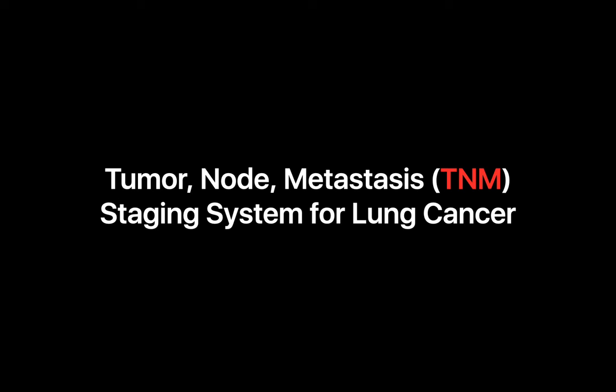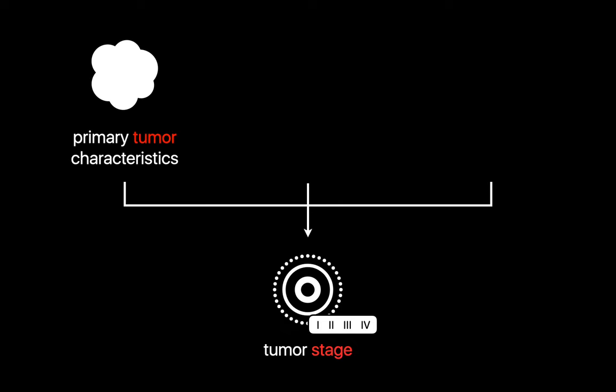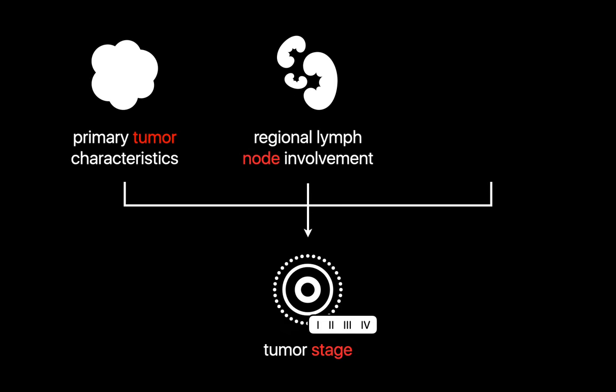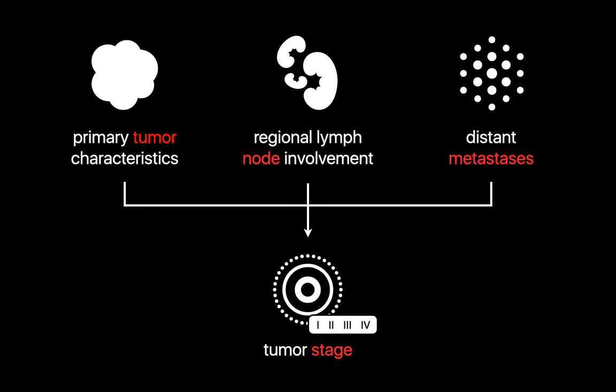The TNM system is a standardized method for categorizing the extent or stage of lung cancer spread in patients on a scale of 1 through 4, based on a combination of the primary tumor's characteristics, the extent of regional lymph node involvement, and the presence or absence of distant metastasis. The primary tumor, or T category, is scored on a scale of 1 to 4, based on the size of the primary tumor and extent of invasion into adjacent tissues.